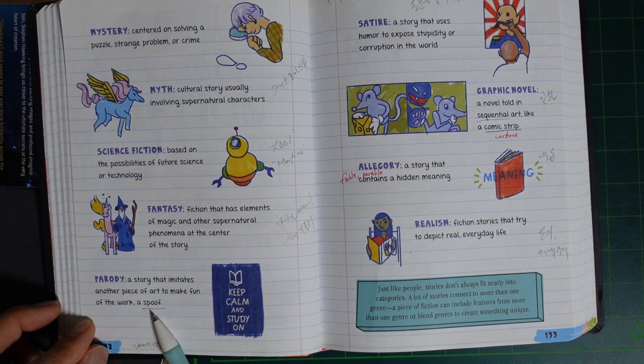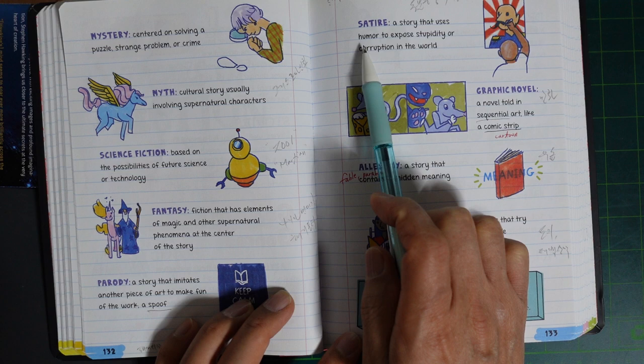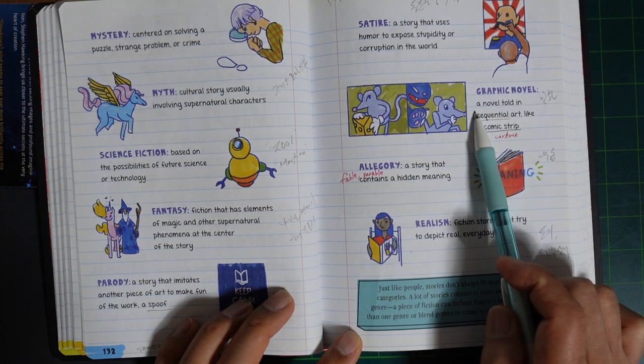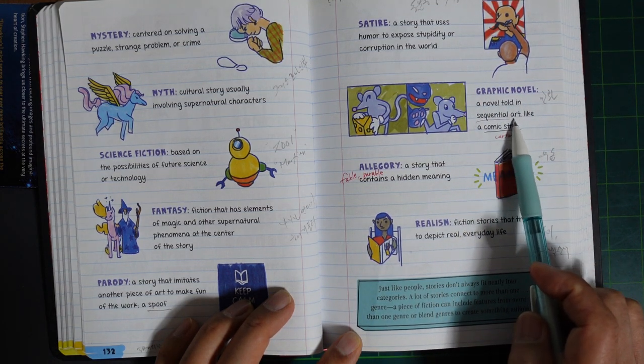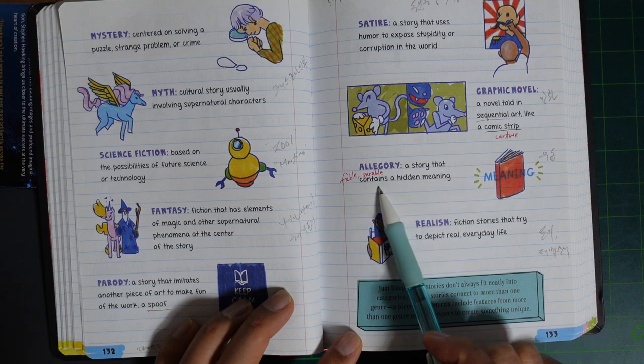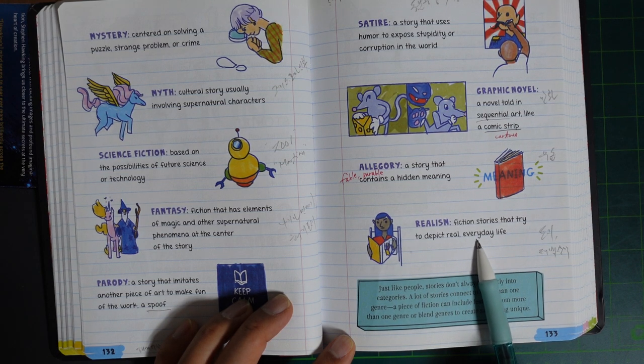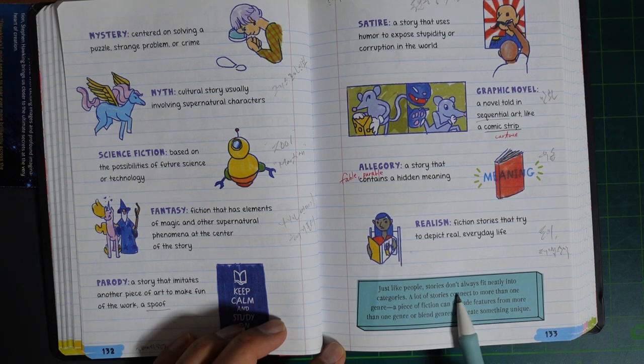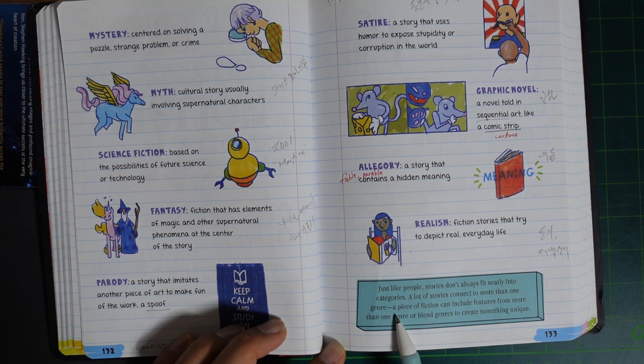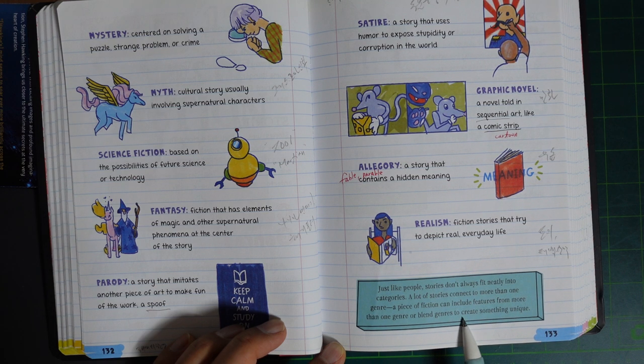Parody—a story that imitates another piece of art to make fun of the work or its genre. Keep calm and study on. Satire—a story that uses humor to expose stupidity or corruption in the world. Graphic novel—novel told in sequential art like a comic strip. Allegory—a story that contains a hidden meaning. Realism—fiction stories that try to depict real everyday life. Just like people, stories don't always fit neatly into categories. A lot of stories connect to more than one genre. A piece of fiction can include elements from more than one genre or blend genres to create something unique.